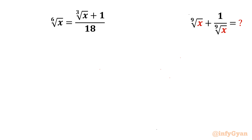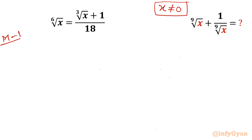Welcome back to Infigyan, my dear friends. Today in this video we are having one very interesting and challenging question from Radical Simplification. The given equation is the 6th root of x equal to the cube root of x plus 1 over 18, and we have to simplify the 9th root of x plus 1 over the 9th root of x. Note that x is in the denominator, so x cannot be 0. I will showcase two different ways to solve this problem. Let me write here Method Number 1.